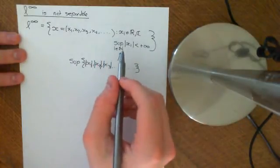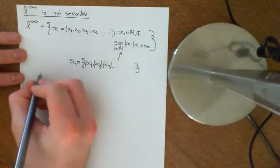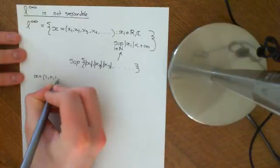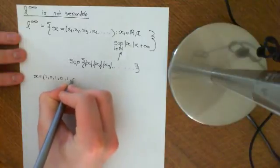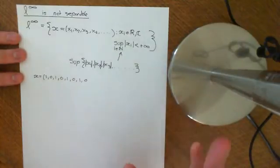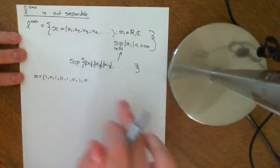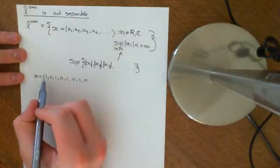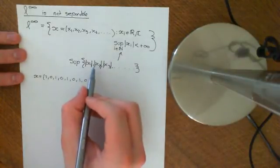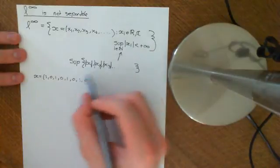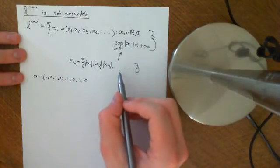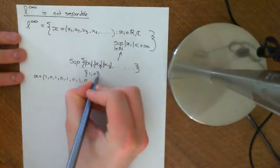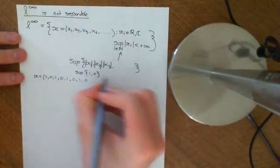As an example, consider the sequence 1, 0, 1, 0, 1, 0, 1, 0 — continuing on and on, alternating between 1 and 0. That's clearly going to be an element of this set, because there are only two distinct values: 1 and 0. So the set of terms is just {0, 1}, and when you take the supremum of that set, it equals 1, because 1 is the least upper bound.